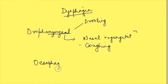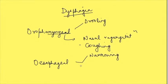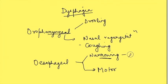Esophageal dysphagia may occur either due to narrowing of the lumen of the esophagus — that is, structural problems — or due to motor problems, meaning the coordinated wave of peristalsis and the contraction and relaxation of muscle is not occurring properly. When there is narrowing of the esophagus, it mostly leads to dysphagia with solids, but motor problems lead to dysphagia with both solids and liquids.